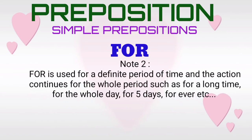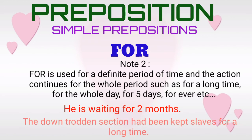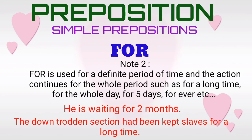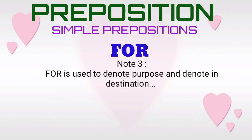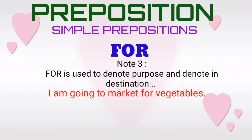Note two. The simple preposition 'for' is used for a definite period of time when the action continues for the whole period — such as 'for a long time', 'for the whole day', 'for five days', 'forever', etc. For example: 'He is waiting for two months.' 'The downtrodden section had been kept as slaves for a long time.' Note three. The simple preposition 'for' is used to denote purpose and destination. For example: 'I am going to the market for vegetables.' 'We voted for Trump.'